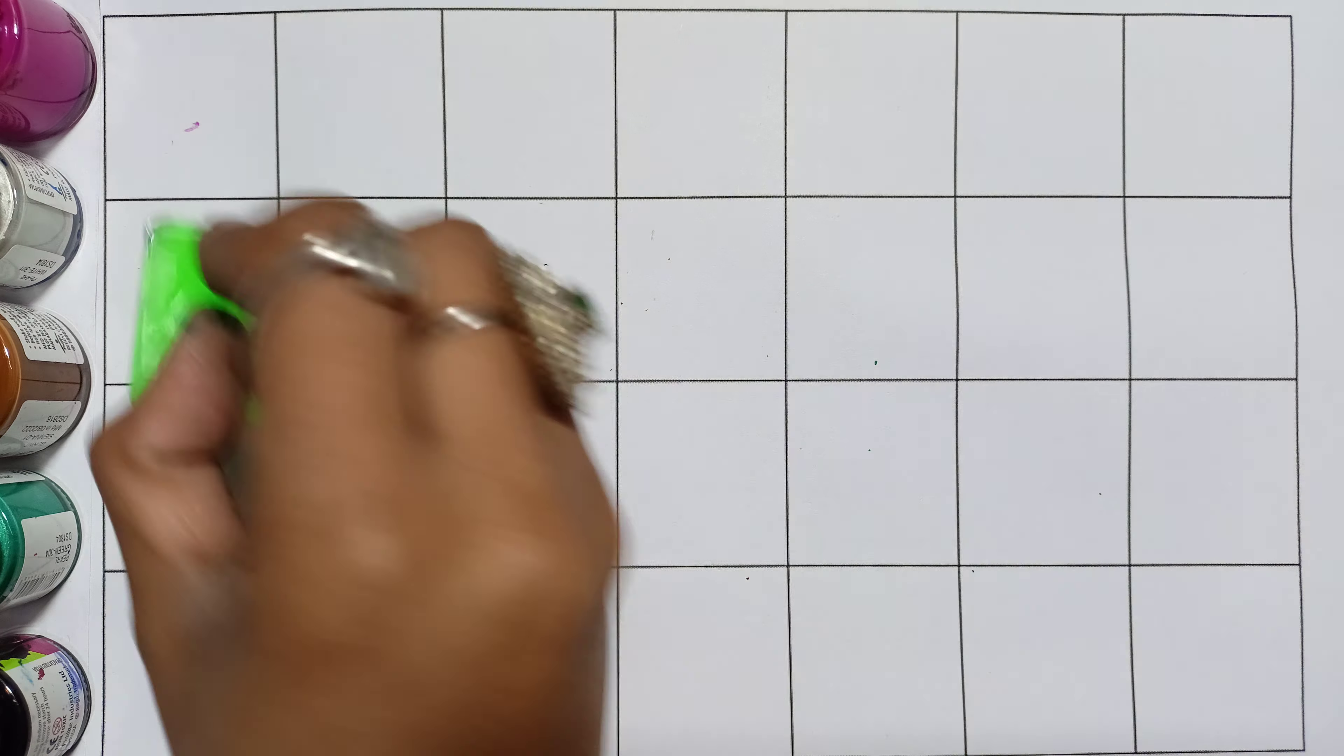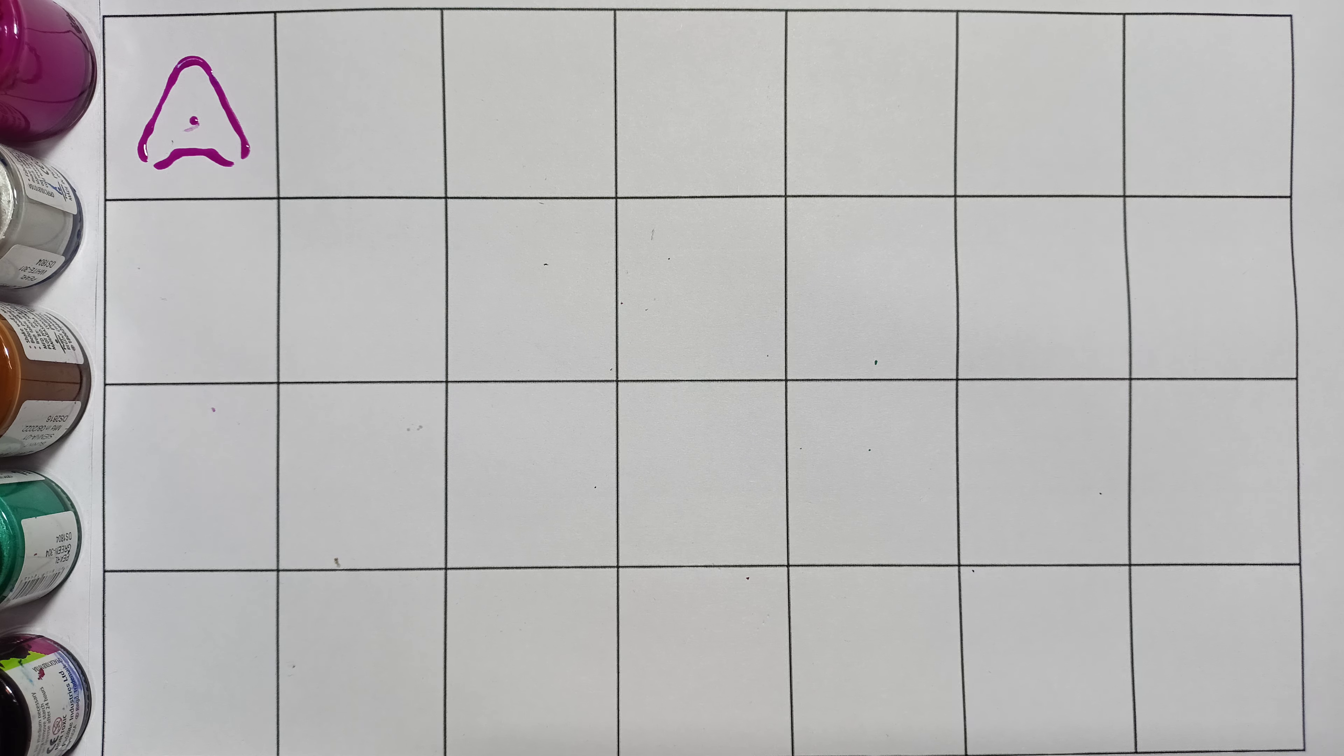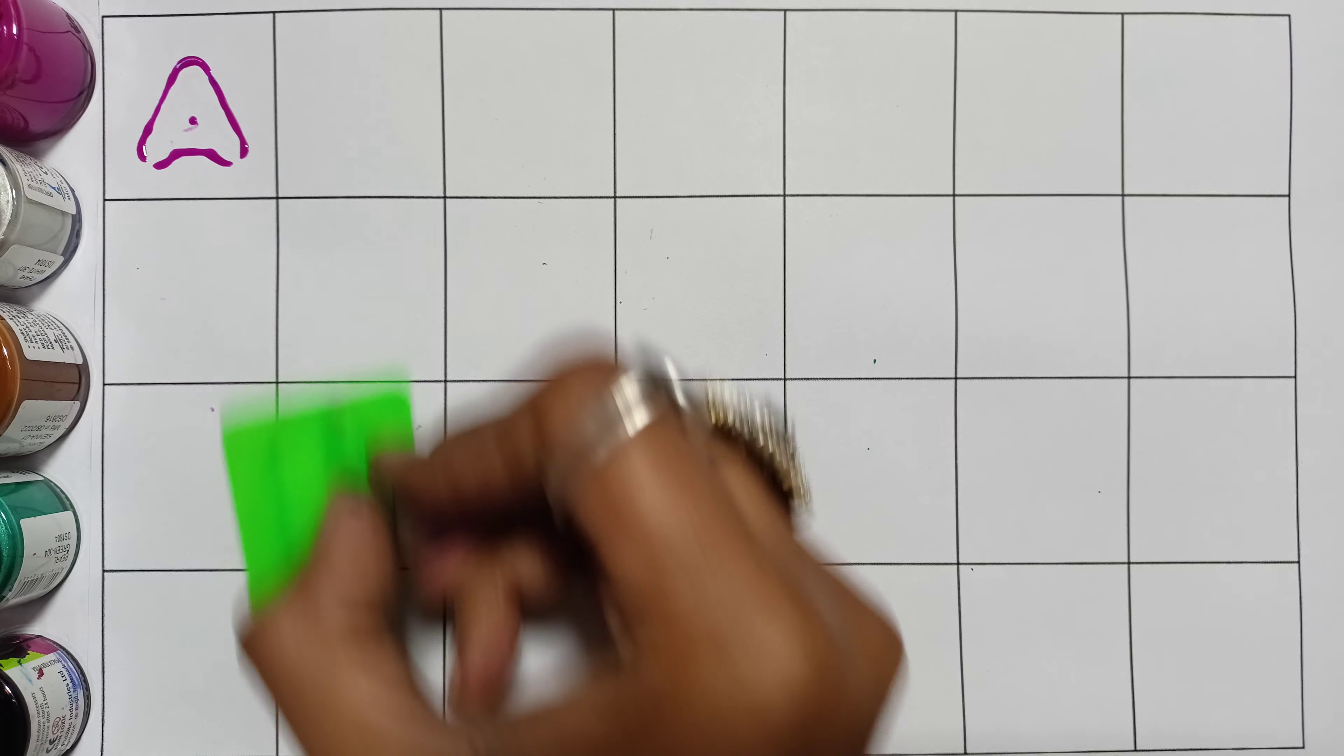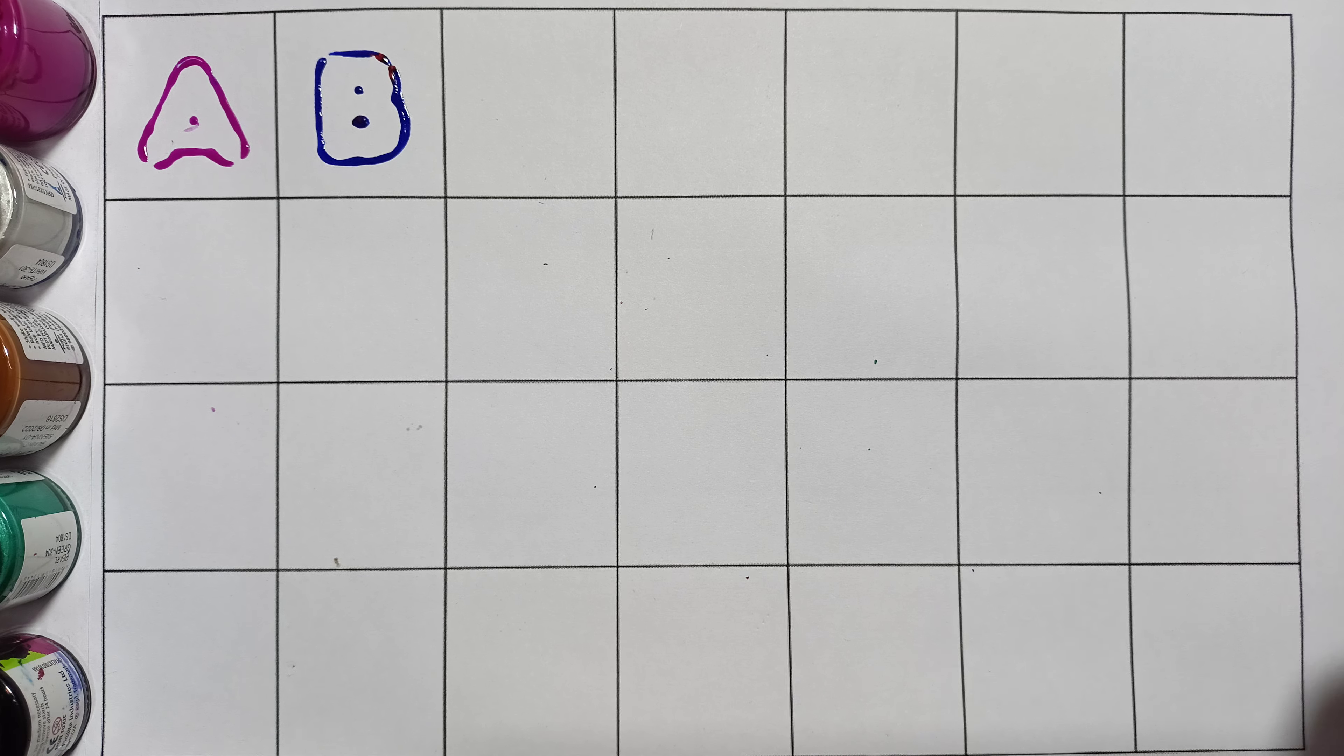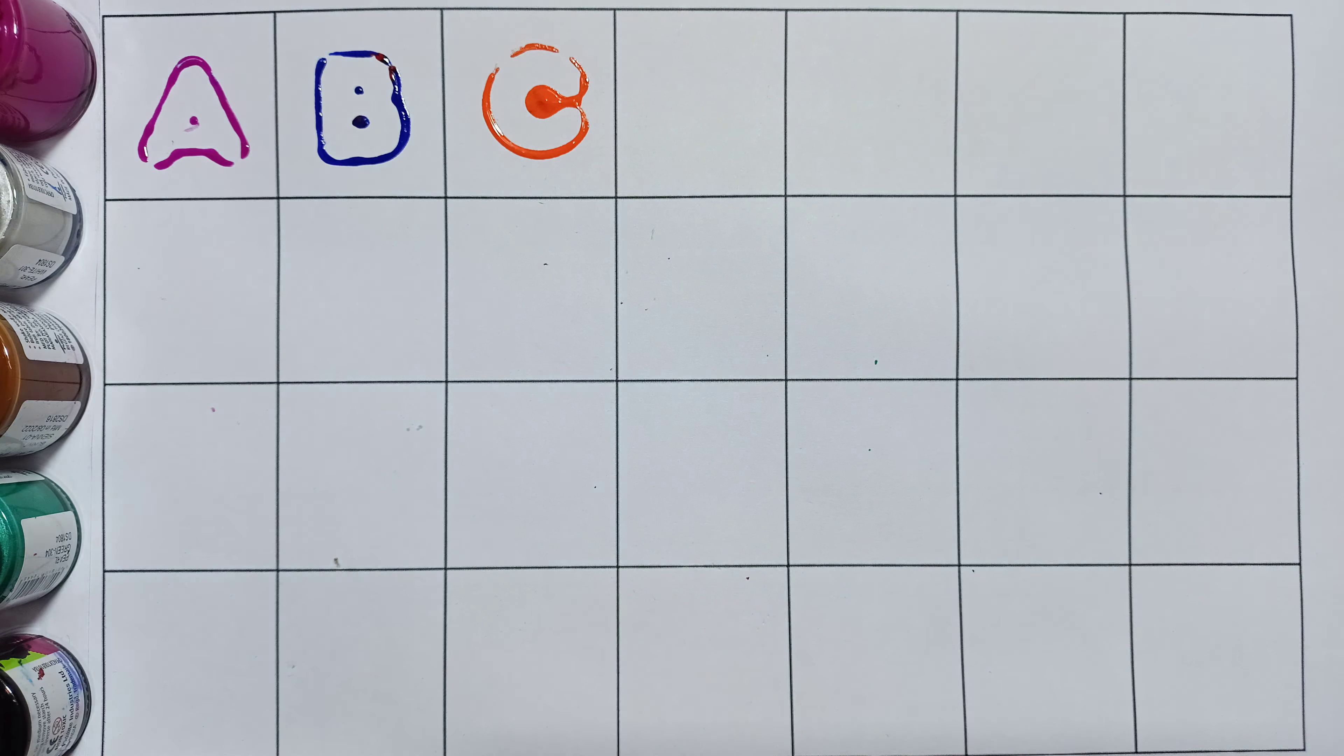A, A for apple. B, B for ball. C, C for cat. D, D for dog.